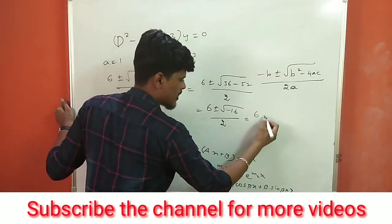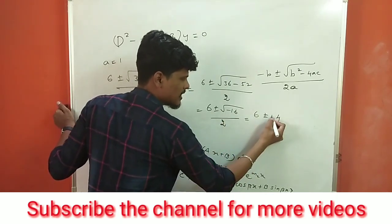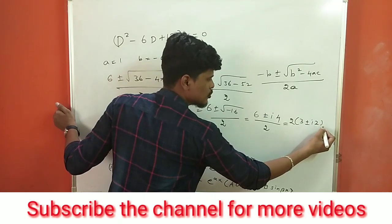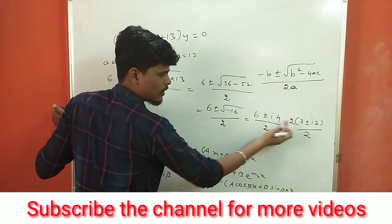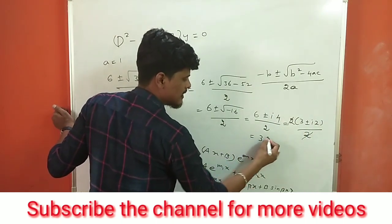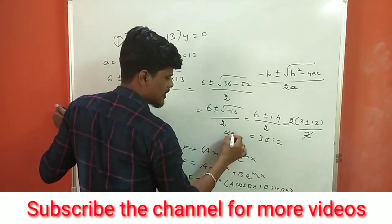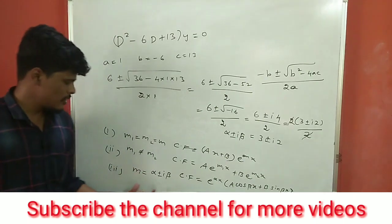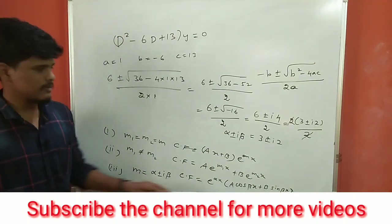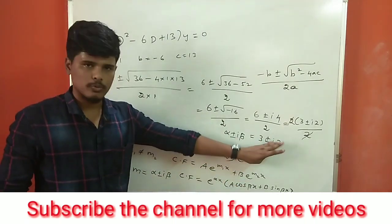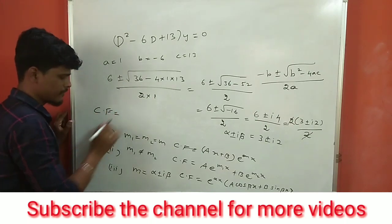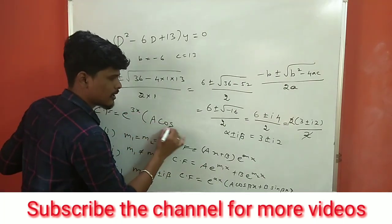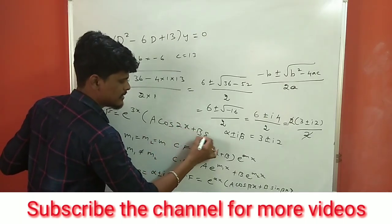We have an imaginary part. So: 6 plus or minus i×4, divided by 2. Dividing: 6÷2 = 3, and 4÷2 = 2. So m = 3 ± 2i. This matches alpha ± i·beta, where alpha = 3 and beta = 2. This is the third case — complex roots. CF = e^(3x) × [a·cos(2x) + b·sin(2x)].